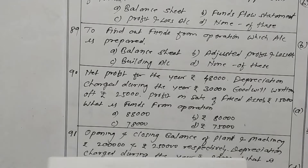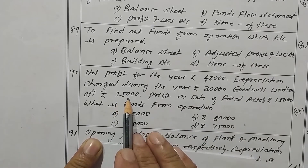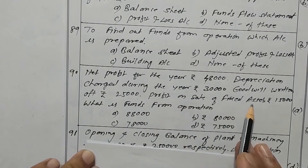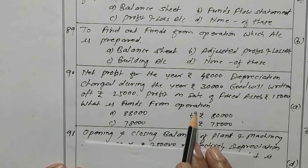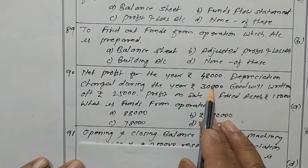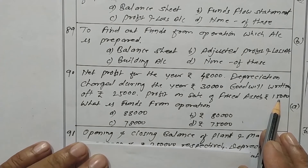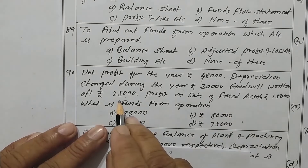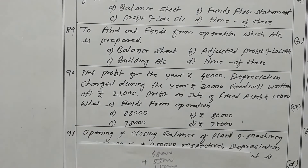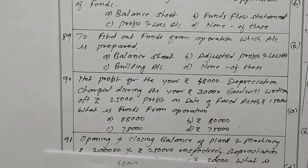Question 90. Net profit for the year is 48,000, depreciation charge is 30,000, goodwill written off is 25,000, and profit on sale of assets is 15,000. Funds from operations: net profit 48,000 plus depreciation 30,000 plus goodwill written off 25,000 minus profit on sale of fixed assets 15,000, giving rupees 88,000. Option A is the correct one.